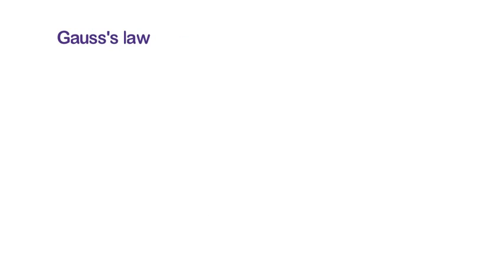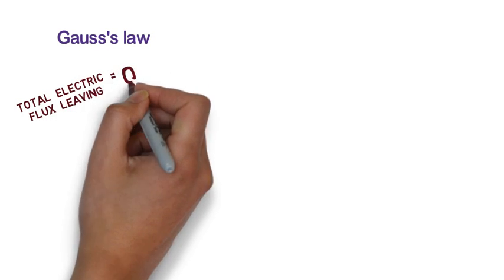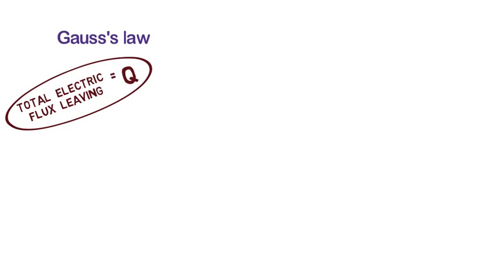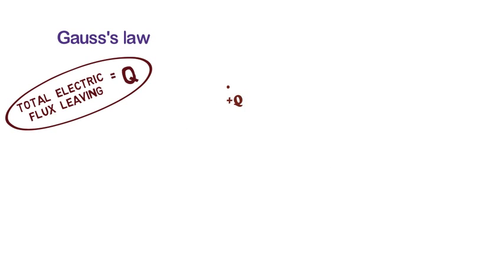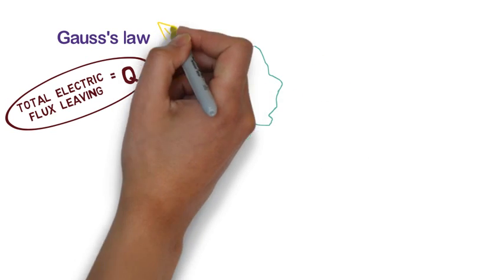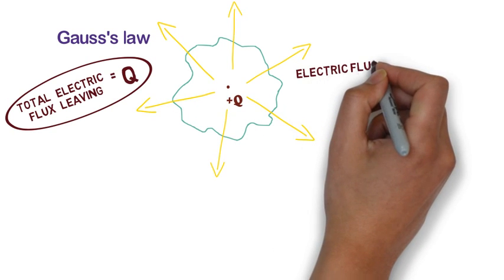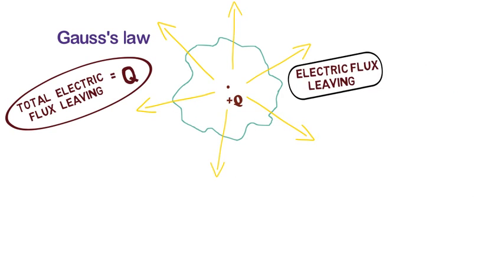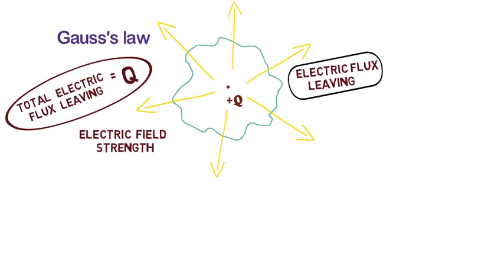Let's start with Gauss's law. Gauss's law states that the net flux leaving through any enclosed surface is always equal to the charge enclosed by that surface. For example, if there is a positive charge plus Q and we draw a surface around it which completely encloses the charge, then the total flux leaving that surface would be equal to Q. We can apply Gauss's law to find the strength of electric field at any point due to point charges, line charges, or sheet charges.